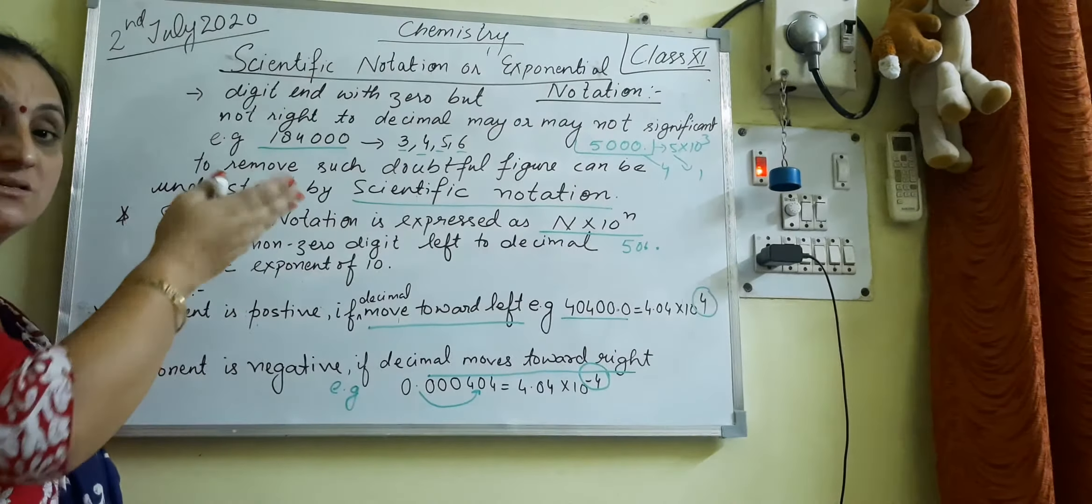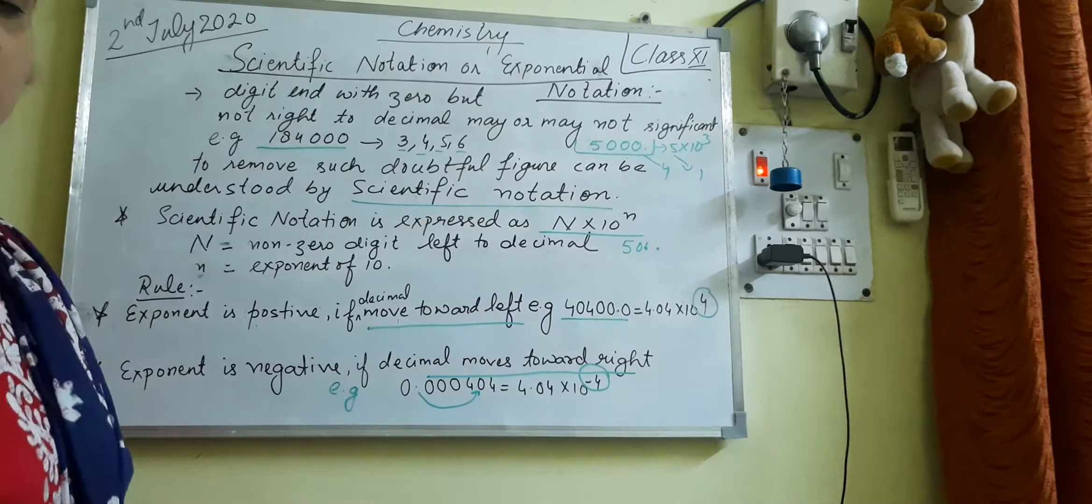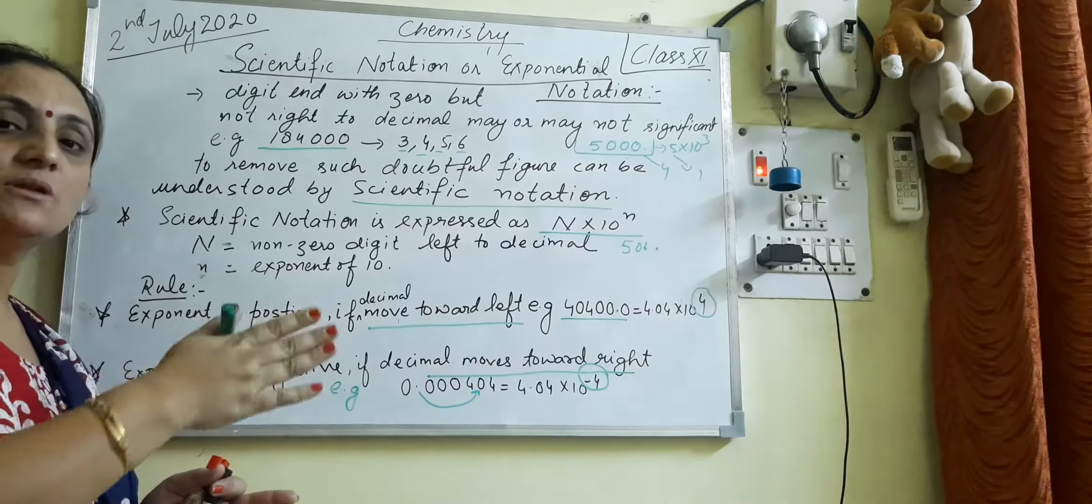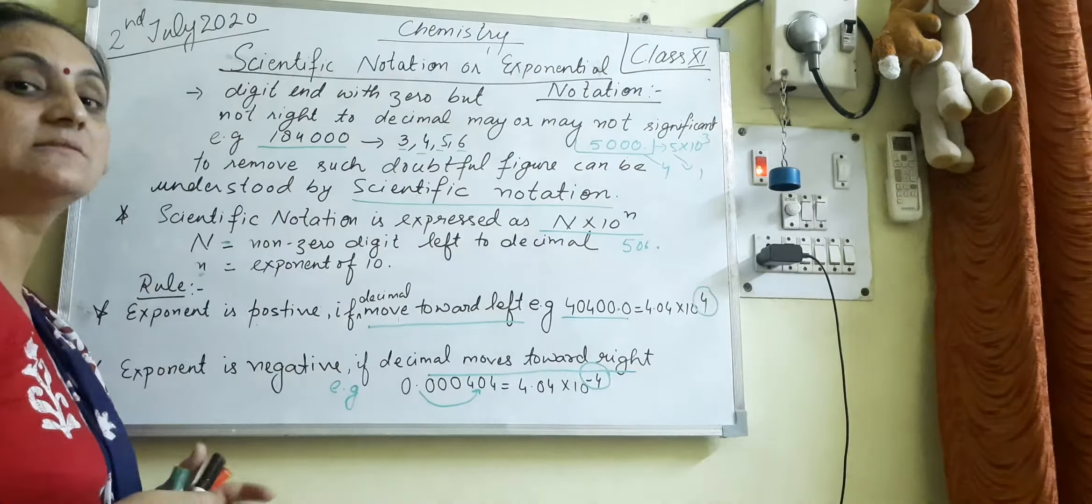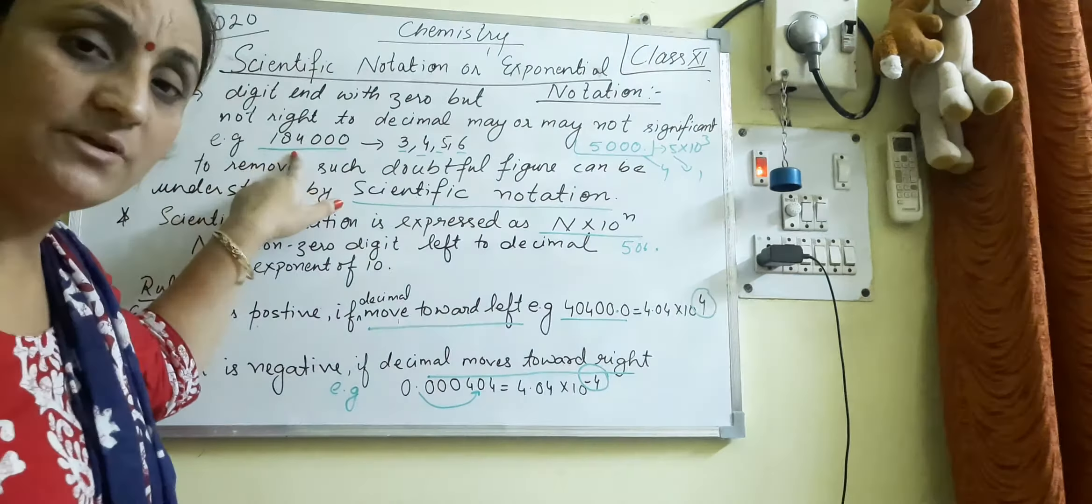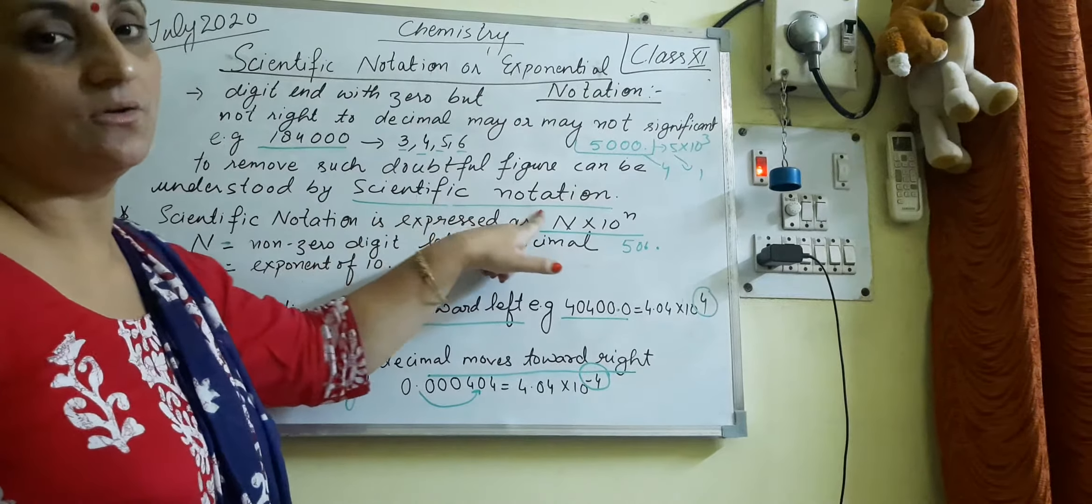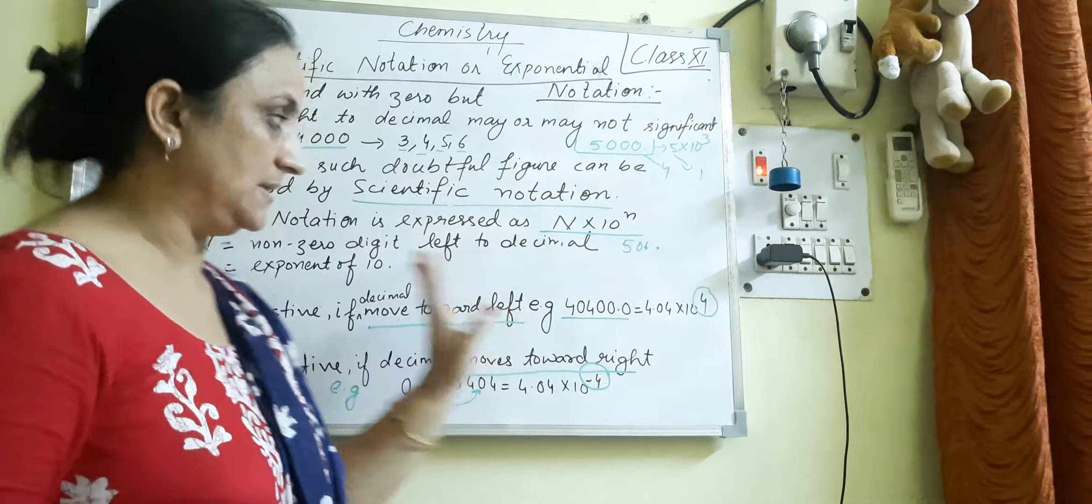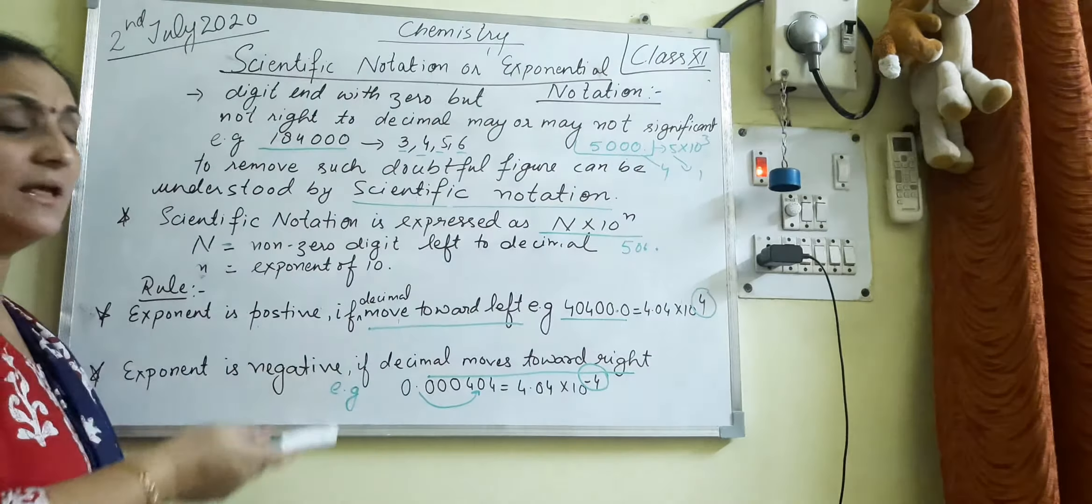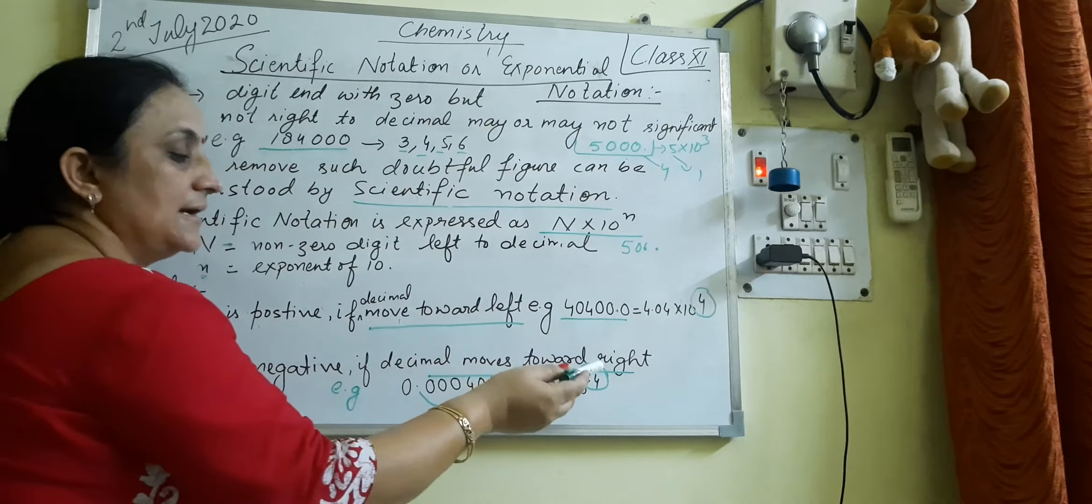So I'm repeating this topic, scientific notations. What do the scientific notations do? In significant figures, when a number ends with zeros and there's no decimal point, we cannot determine the exact number of significant figures. So here we have an example like 18400 where we can consider 3, 4, 5, or 6 significant figures, so this term is very confusing. To remove that confusion, there is an introduction of scientific notation term which we represent as N into 10 raise to power n. N is the non-zero digit number left to the decimal side, and n is the exponent of 10. It becomes positive when the decimal moves left side and it becomes negative when the decimal moves right side.